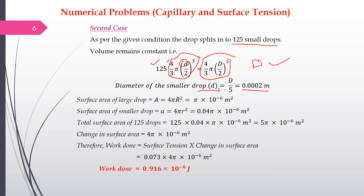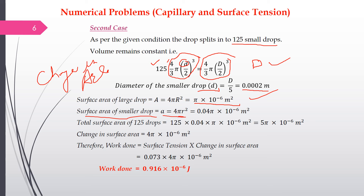We find the surface area of both the large and the small drops. The surface area of the larger drop is 4πR², and substituting its radius gives π × 10⁻⁶ m². The surface area of each smaller drop, using the smaller radius, is 0.04π × 10⁻⁶ m².